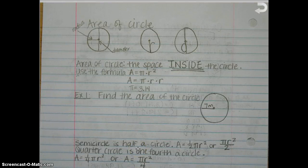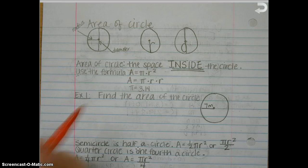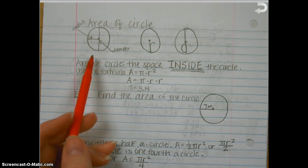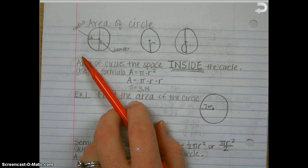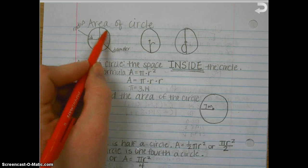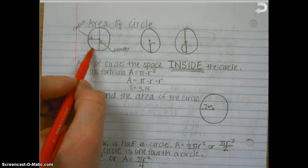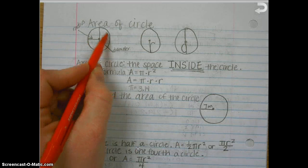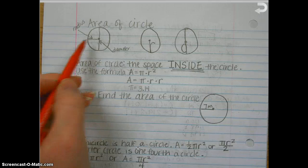All right, so now in this video we're going to talk about the area of a circle. Before we start, a quick recap. Circumference is the distance to go around the circle — it's like the perimeter.